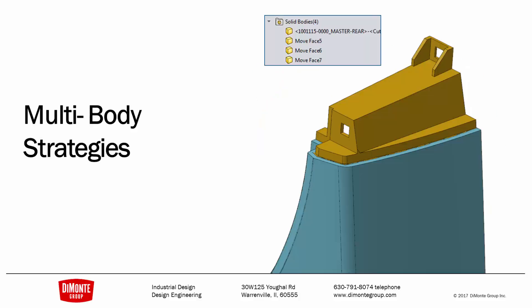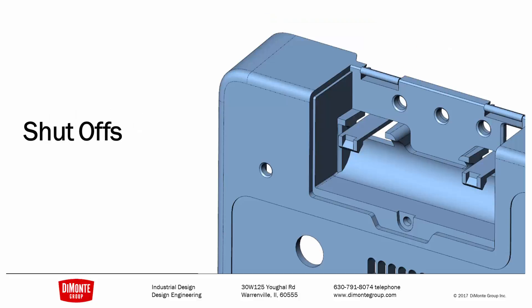We'll be taking a look at some multi-body part modeling strategies where we're working with multiple bodies using the shell tool, and then finally combining those multiple bodies back together at the end. This is a great way to easily model tricky geometry when you don't have access to an entire feature tree and can roll to the desired point in that tree.